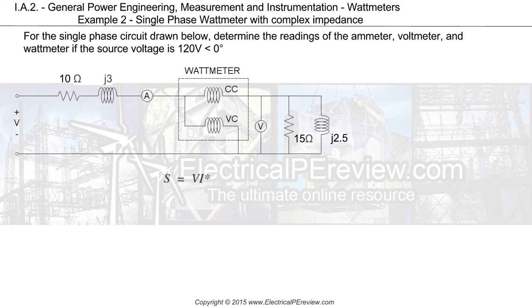Now that we know both voltage and current, we can find our power. Since the wattmeter's voltage coil is tied directly into the load, we'll exclude our series impedance just like we did for finding the voltage across the load.